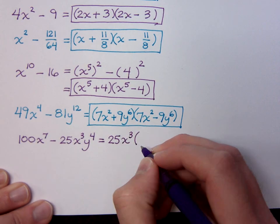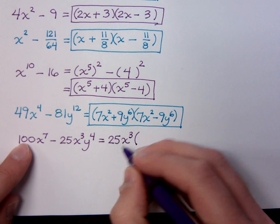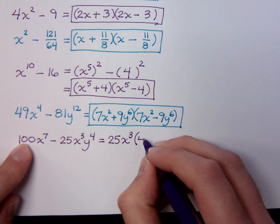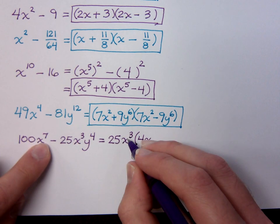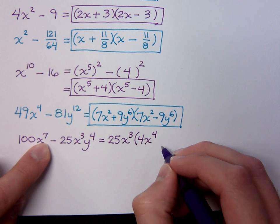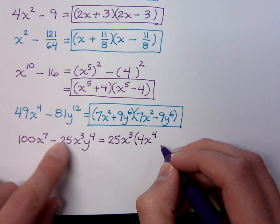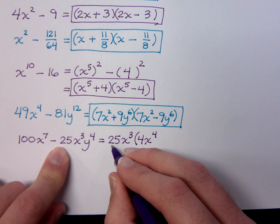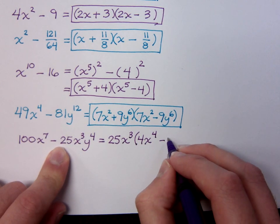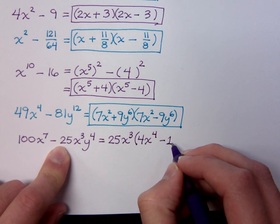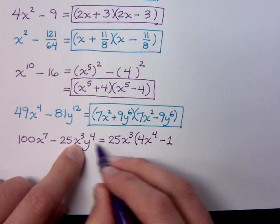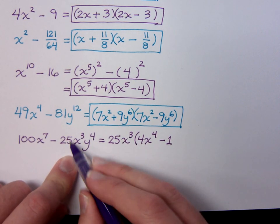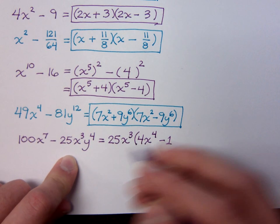When I factor that out, what's left? 100 divided by 25 is 4. How many x's do I have? I had 7, I took out 3, I have 4. And then I had negative 25 divided by 25 is negative 1. I had x³ and I took all those out, and I'm left with y^4.